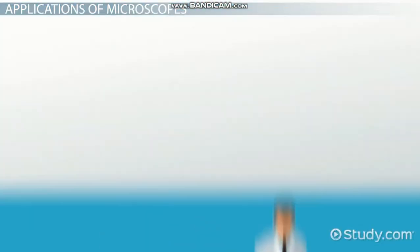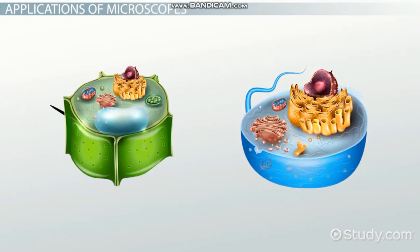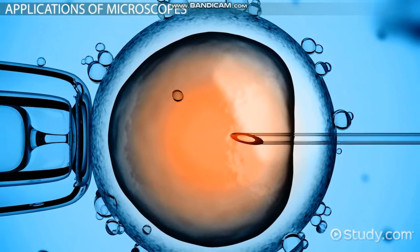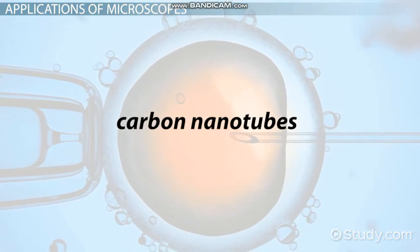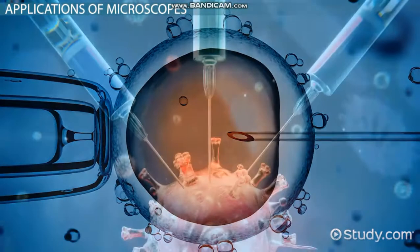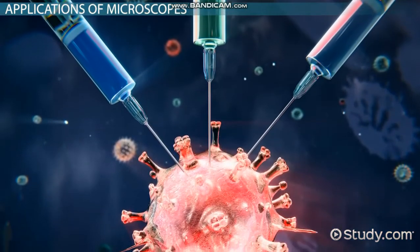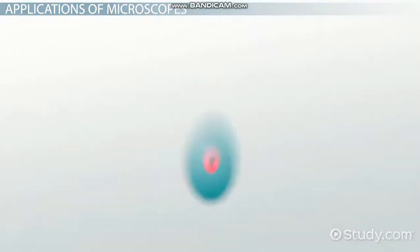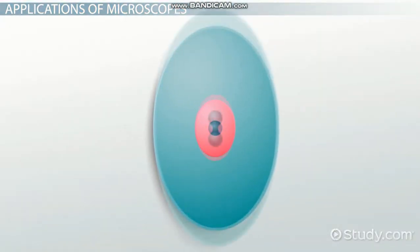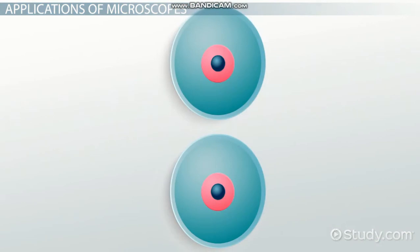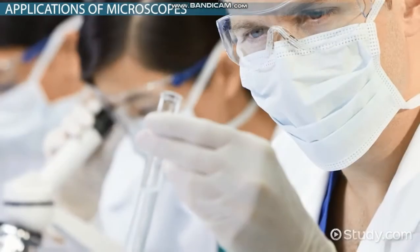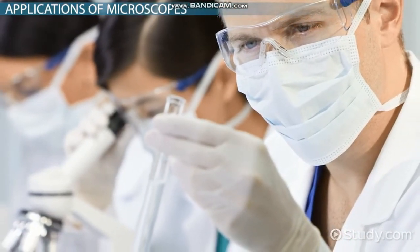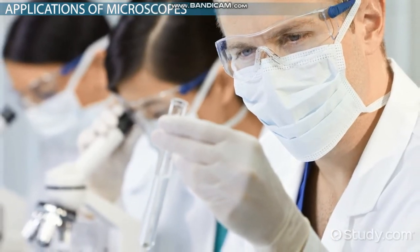We use them in biology to study cells with optical light microscopes, develop nanotechnology like carbon nanotubes with electron and scanning probe microscopy, and in pathology to understand how diseases work. We've got a much better understanding of the human body thanks to microscopes, and that has led to treatments for all kinds of diseases. In fact, microscopes are even used directly in medicine to analyze biological samples from patients.